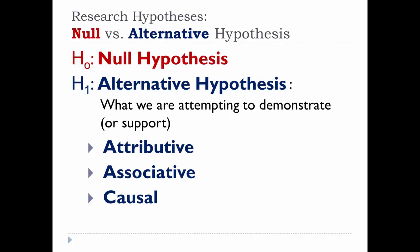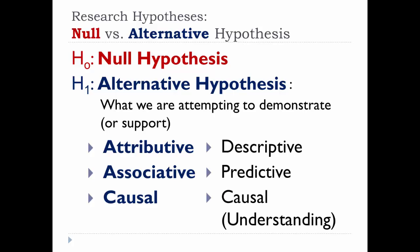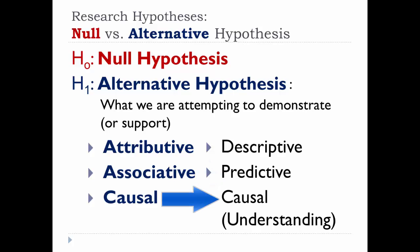And if you recall the three different types of knowledge, you'll see that there is a connection between the two. Attributive hypotheses correspond with descriptive knowledge, associative with predictive knowledge, and causal with causal understanding. Let's go into each in more detail.